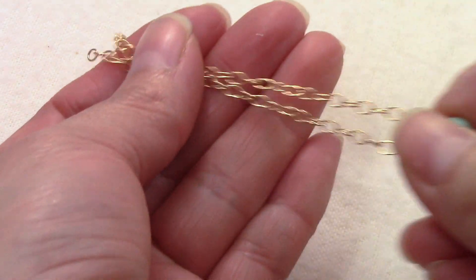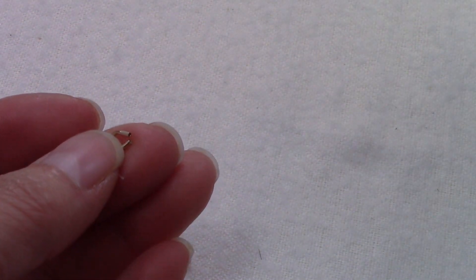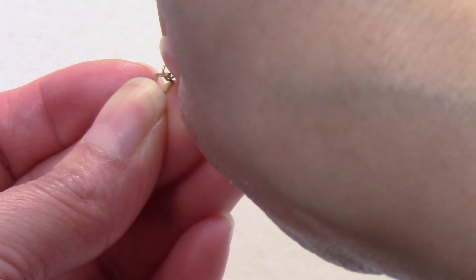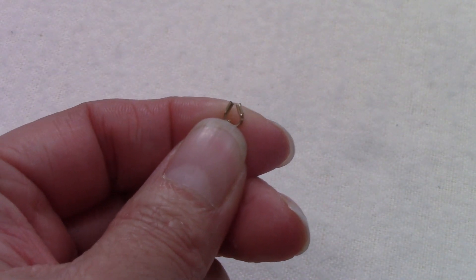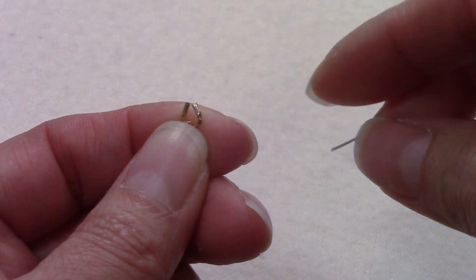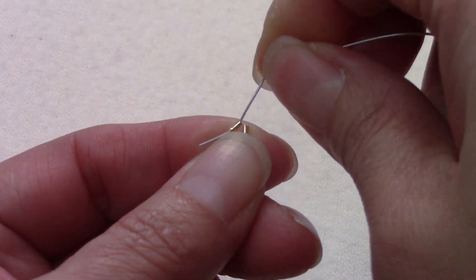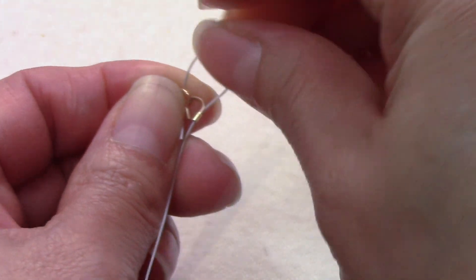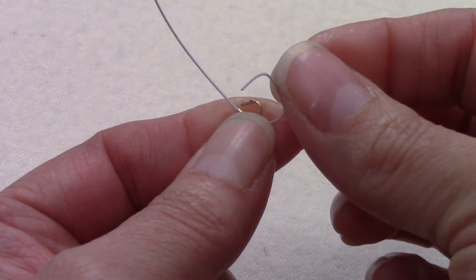Go ahead and repeat the same step on the other piece of chain. I have my two pieces of chain ready. You are going to grab your wire guardian, you are going to grab our wire. Pass it through one side of the wire guardian, pass it through the chain, and down through the other side of the wire guardian.